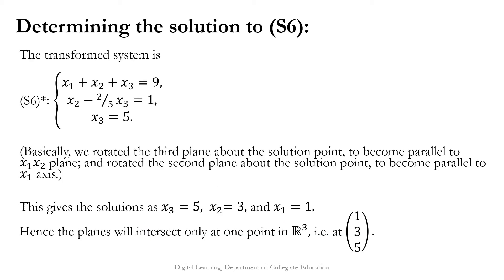Now let us find the solution to system S6. The transformed system corresponding to the row echelon form of the augmented matrix is: x₁ + x₂ + x₃ = 9, x₂ − (2/5)x₃ = 1, and x₃ = 5. We rotated the third plane about the solution point so that it becomes parallel to the x₁x₂ plane, and the second plane so that it becomes parallel to the x₁ axis. This gives the solution x₁ = 1, x₂ = 3, x₃ = 5, meaning the three planes intersect at the single point (1, 3, 5) in R³.